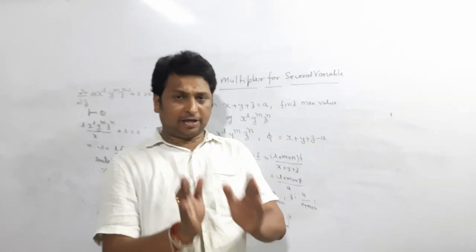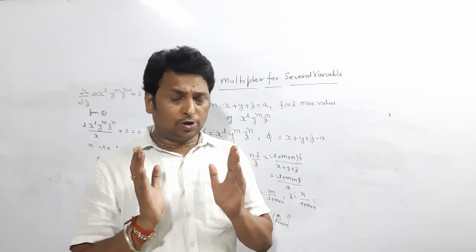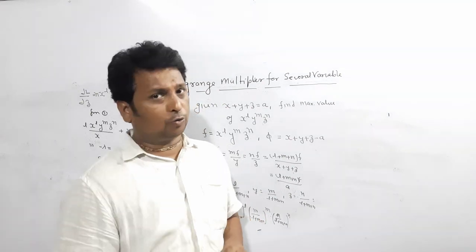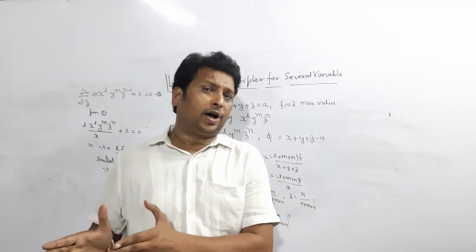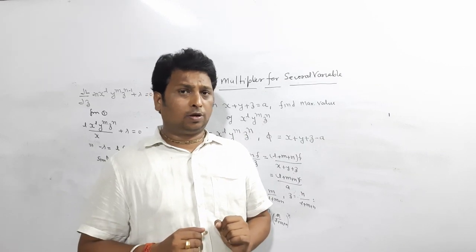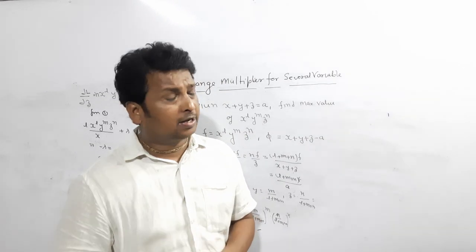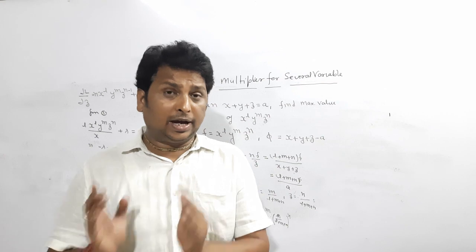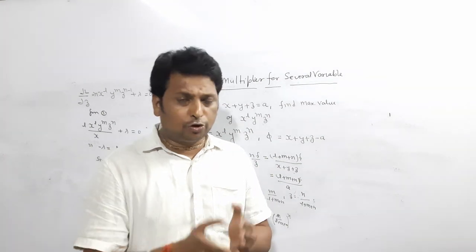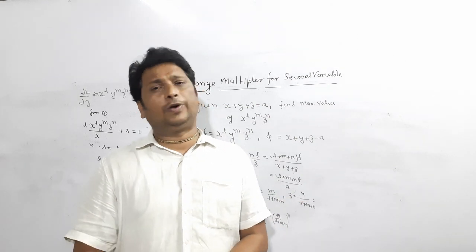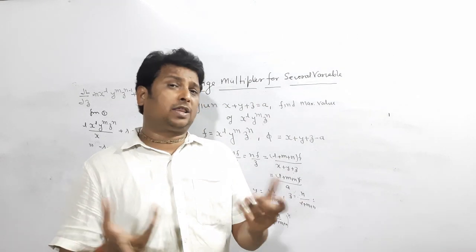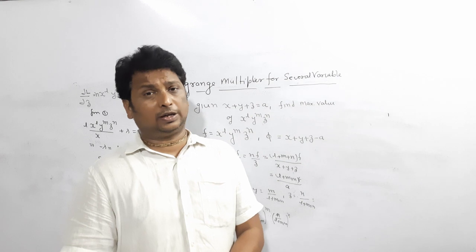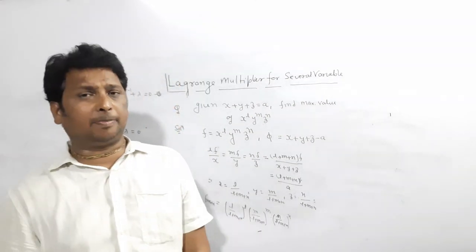So in this way we can calculate maxima and minima under given conditions. It's quite easy — you just find two functions: f (what to maximize or minimize) and phi (the constraint). Write L = f + lambda*phi, differentiate with respect to x, y, z and set equal to zero, solve the system, then substitute back into f to get the answer. Hope you all understand; if you want any specific question, please write in the comments. Thank you.